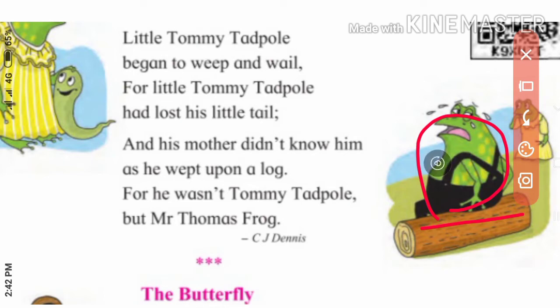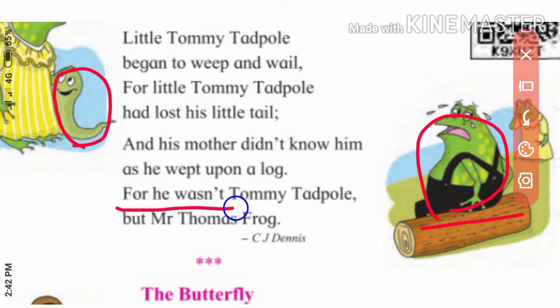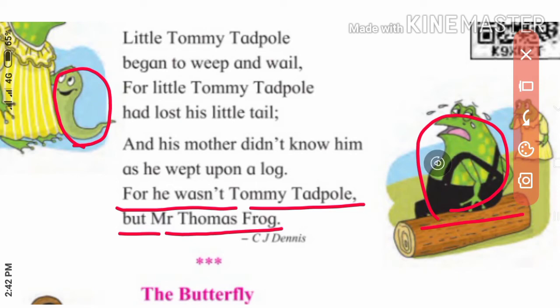He went into the next stage. When he was small, he had a tail, but now he has grown bigger. His tail converted into hands and legs. In that way he became an adult, and what was his name? For he wasn't Tommy Tadpole but Mr. Thomas Frog — he became Mr. Thomas Frog because he developed into an adult.